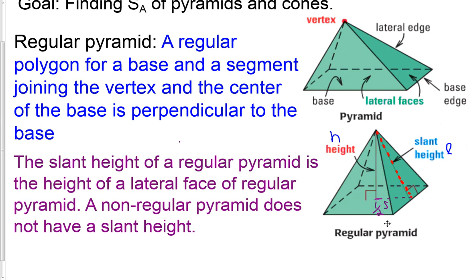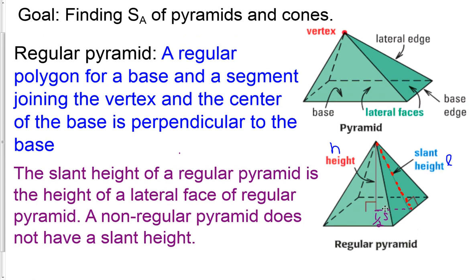So our base is going to be regular. If it's four-sided we're assuming it's a square. The vertex is directly above the center, which gives us this interesting right triangle where the height, half the side length, and the slant height form the right triangle, slant height being the hypotenuse. Slant height is actually used for the surface area. Height is not used.